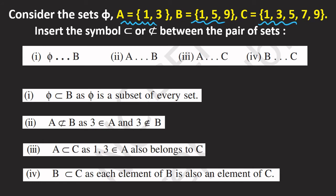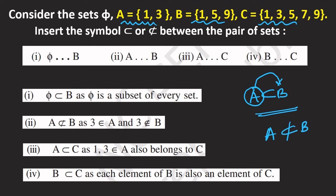Now, given three sets A, B, and C, we look at their relations. For example, if A is given and B is given, we check whether A is a subset of B. The concept is: every element of A must also be in B.